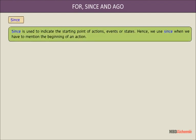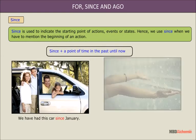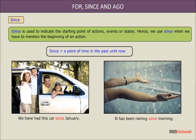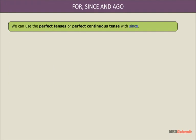Since is used to indicate the starting point of actions, events, or states. Hence, we use since when we have to mention the beginning of an action. For example: We have had this car since January. It has been raining since morning. We can use the perfect tenses or perfect continuous tenses with since.